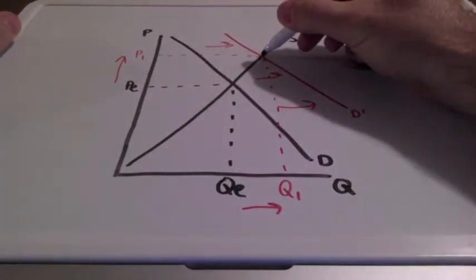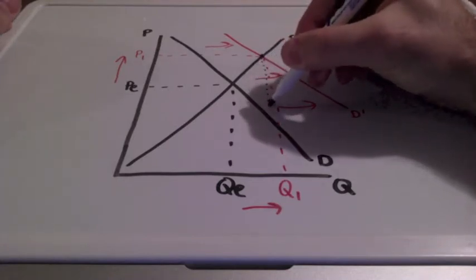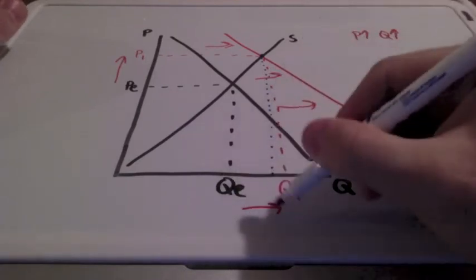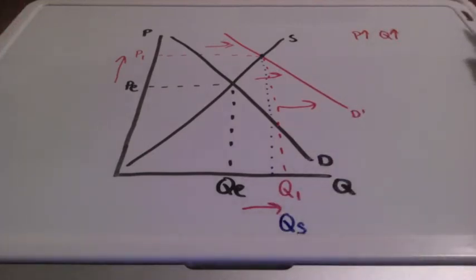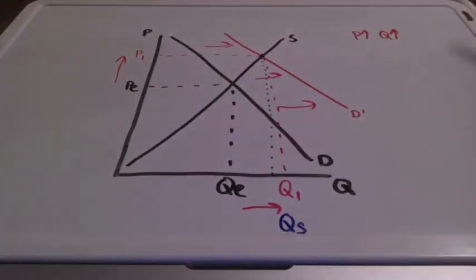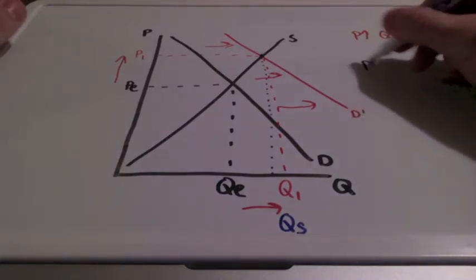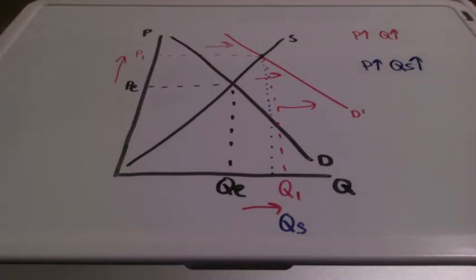This point right here — I'm going to bring this all the way down — represents quantity supplied. Suppliers will increase the quantity supplied of goods and increase costs anticipating higher revenues because of this increase in demand. The law of supply says that when prices go up, quantity supplied will also increase.